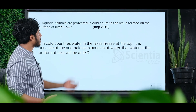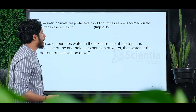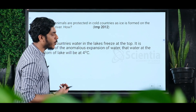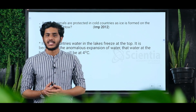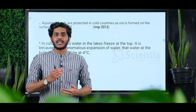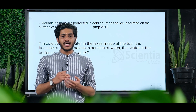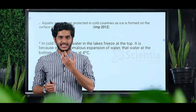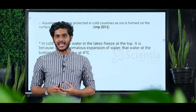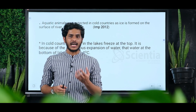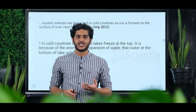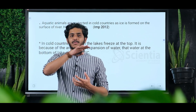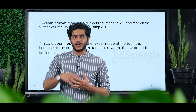Aquatic animals are protected in cold countries because ice is formed on the surface of the river. The river has ice formed on its surface, which protects the aquatic animals below.